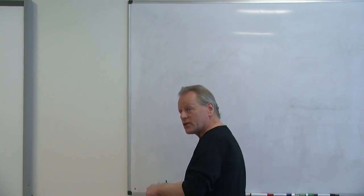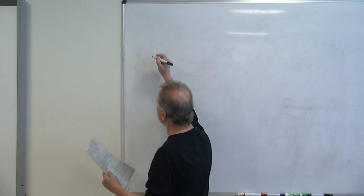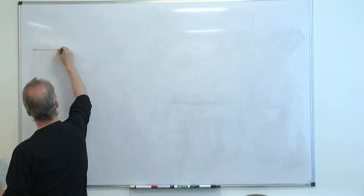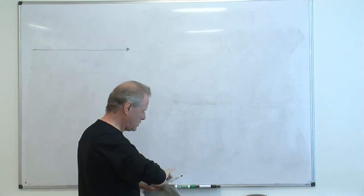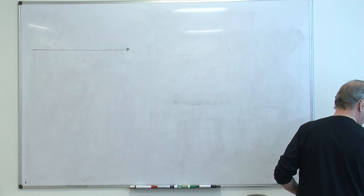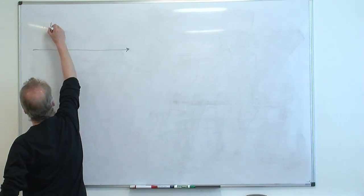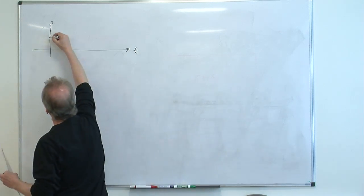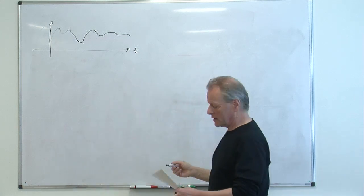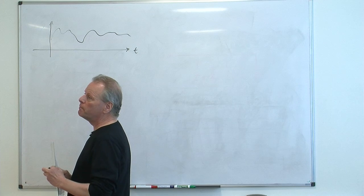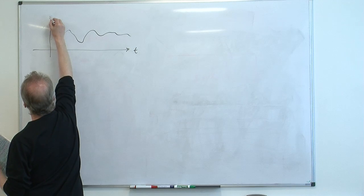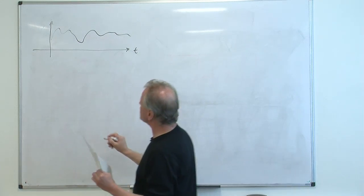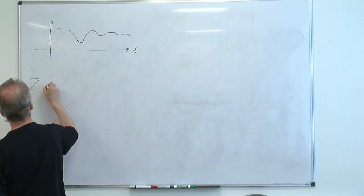So we will now, for the next half hour or so, be considering the following framework. So this is T, time for a stochastic process, and here is the process, and it's got a state space. We could call it something, E or something, but better not to call it anything. And we will be considering two processes which we are going to couple.